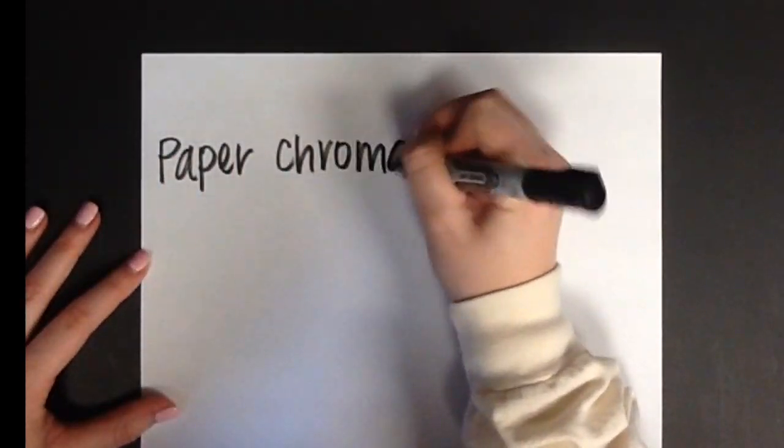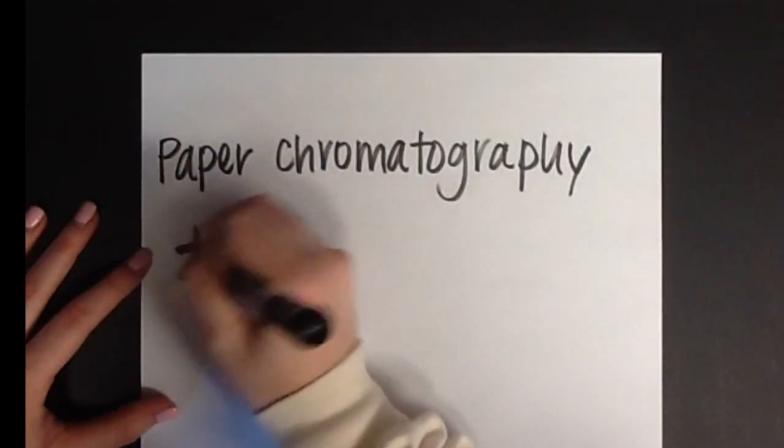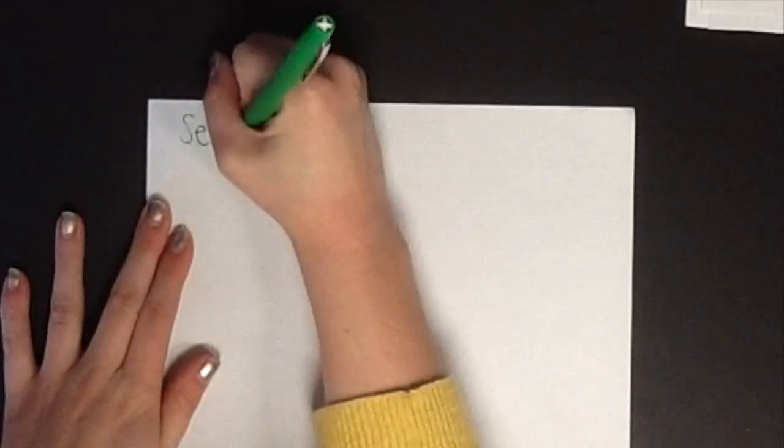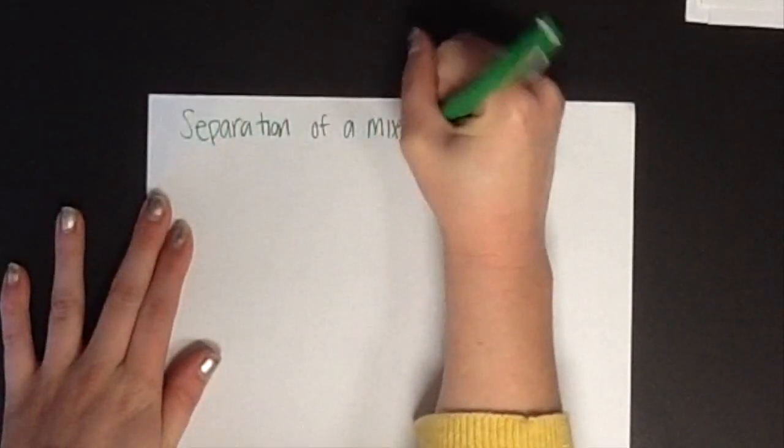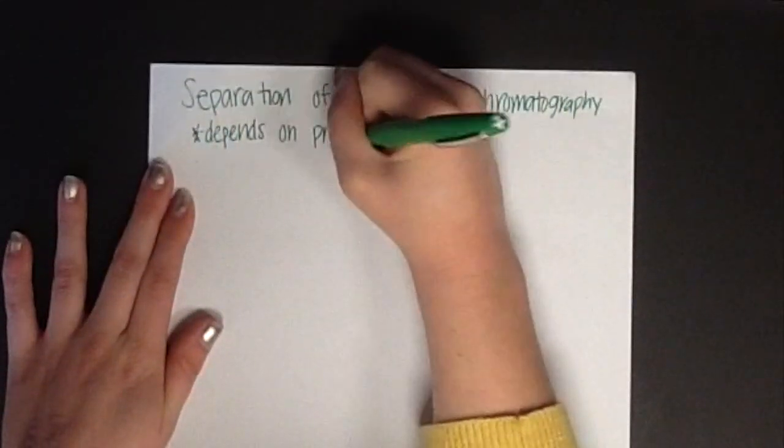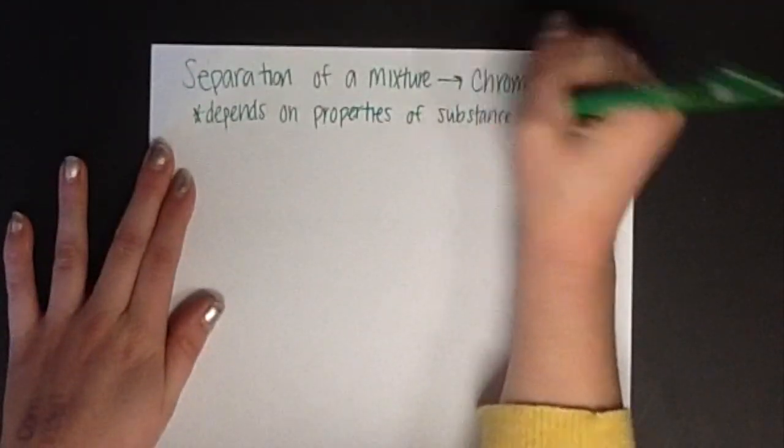On this edition of MC Jim Kim, paper chromatography. In this lab, we are looking at a way to separate a mixture using chromatography. The separation of the mixture depends on the properties of the substance that it contains.